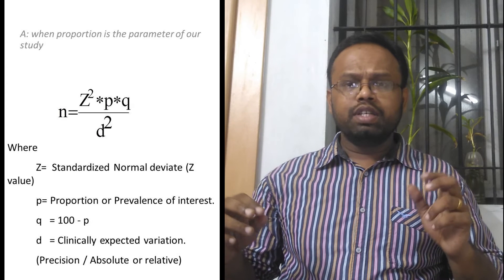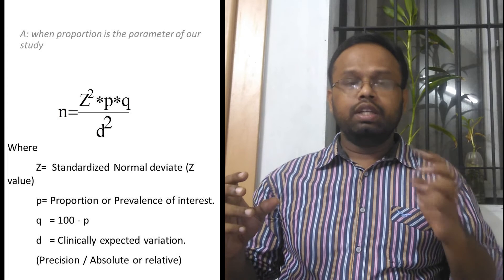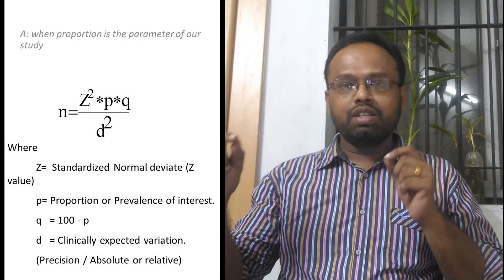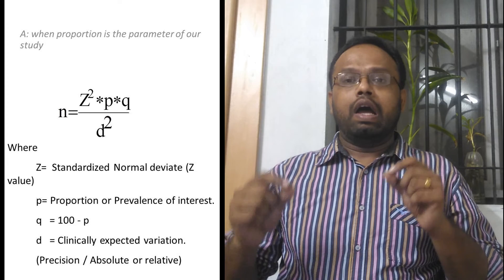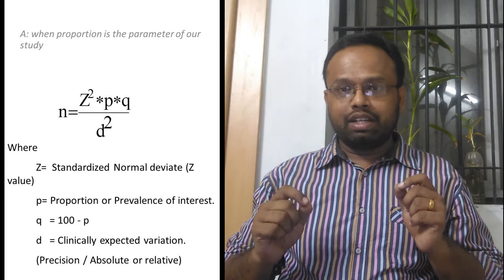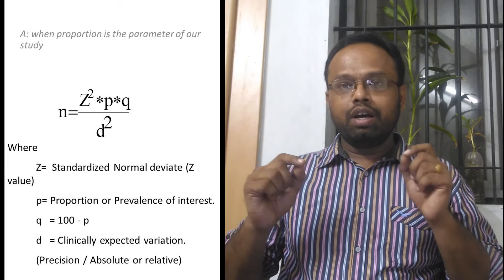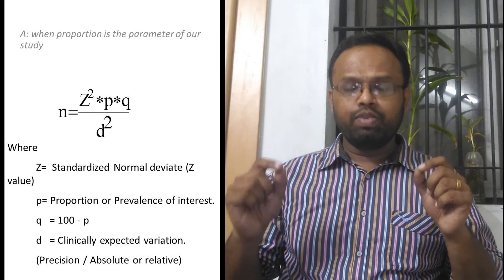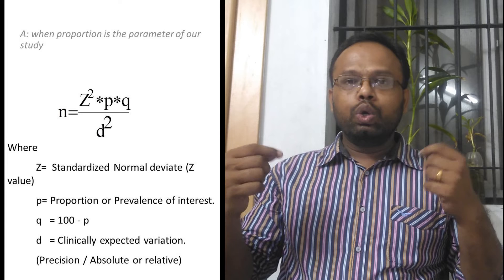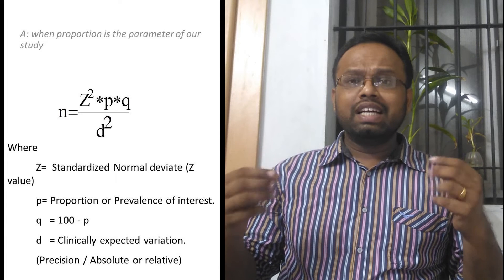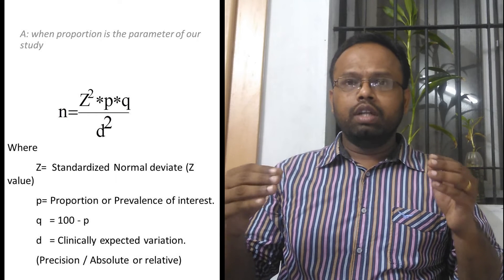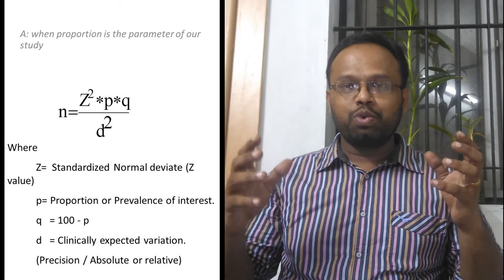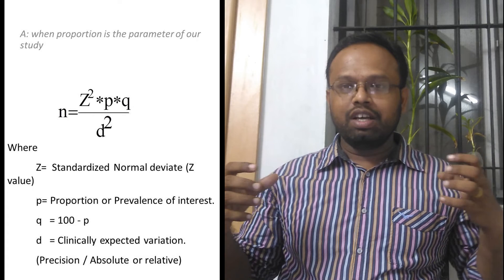First we move on to calculating the sample size when proportion is the parameter of our study. Imagine we are calculating the prevalence of anemia in a community — that is our objective. The formula is: n = z²pq / d², where z is the standardized normal deviate, d is the clinically expected variation. Don't worry about the terms — we are going to see them clearly in detail.